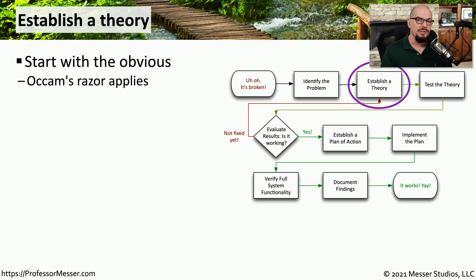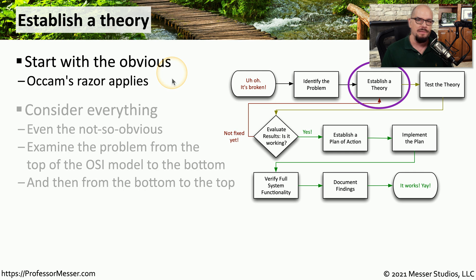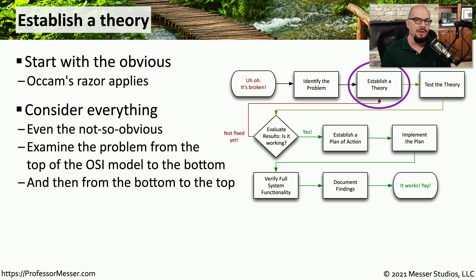Given all of the alternatives, the simplest explanation is usually the right one. As we start looking over the notes we made about this particular problem, we can start arranging them so that the most obvious or most common things are at the top of our list. But this problem might be caused by something that isn't obvious, so we still need to note what those might be. This gives us a full perspective of where the problem might be coming from, even if it turns out to be something uncommon.